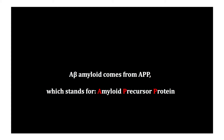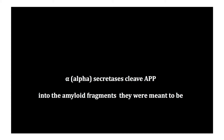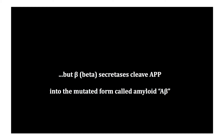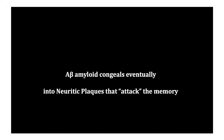A-beta-amyloid comes from APP, which stands for amyloid precursor protein. Alpha-secretases cleave APP into the amyloid fragments they were meant to be, but beta-secretases cleave APP into the mutated form called amyloid AB. AB-amyloid congeals eventually into neuritic plaques that attack the memory.